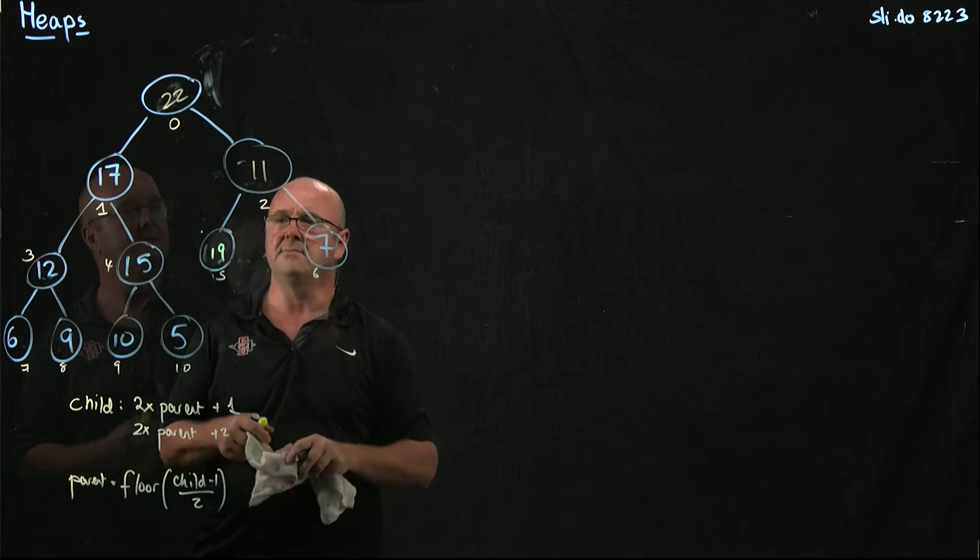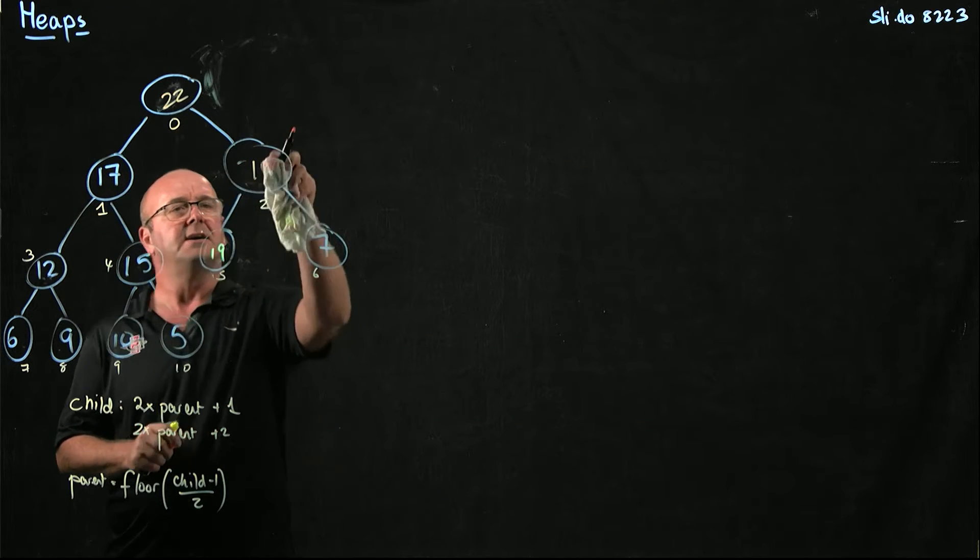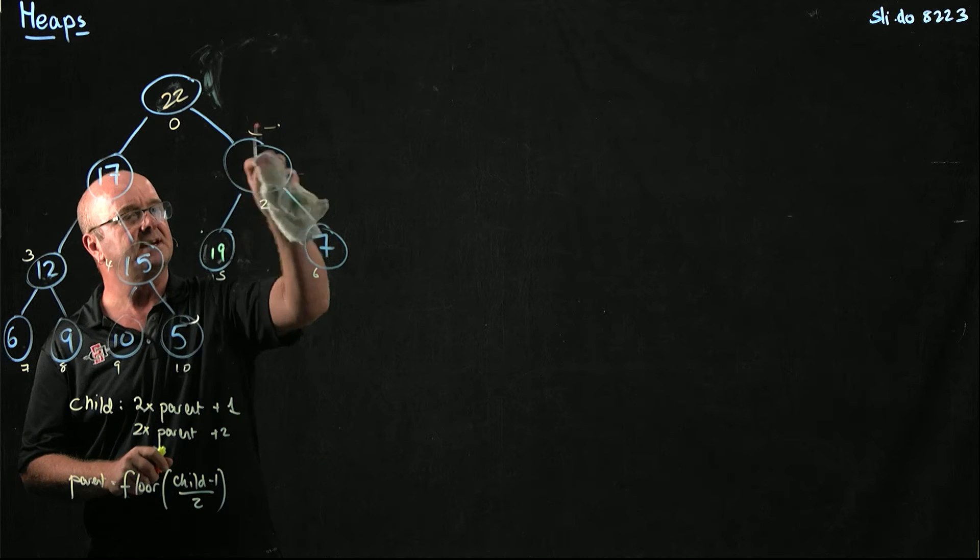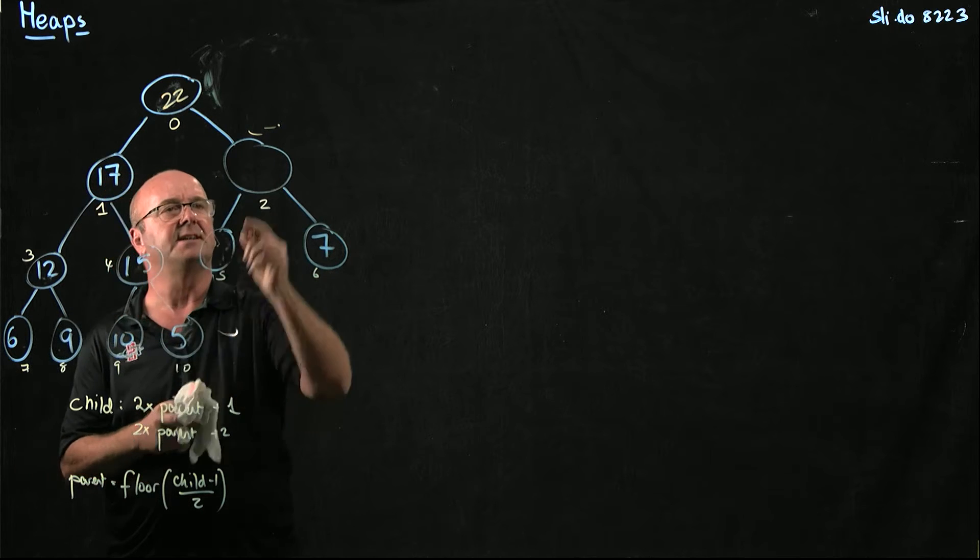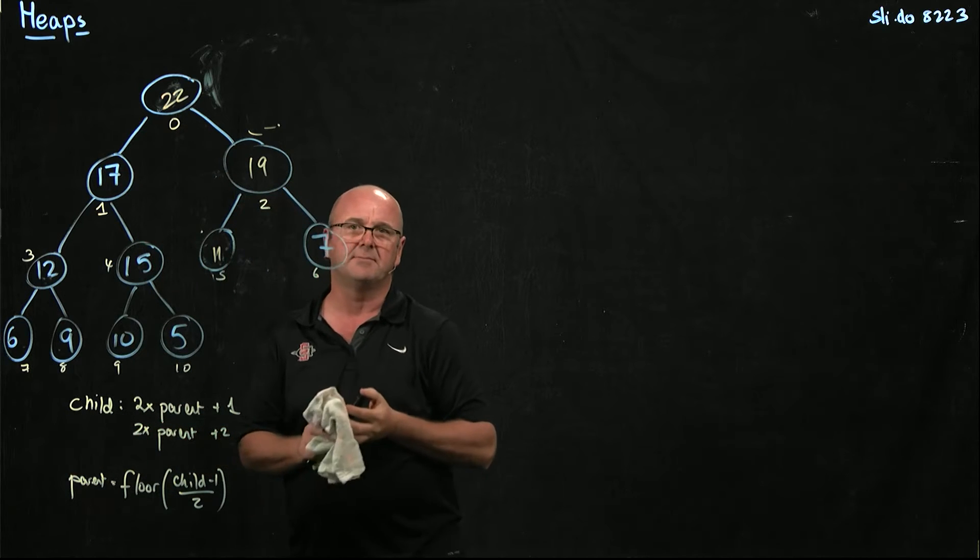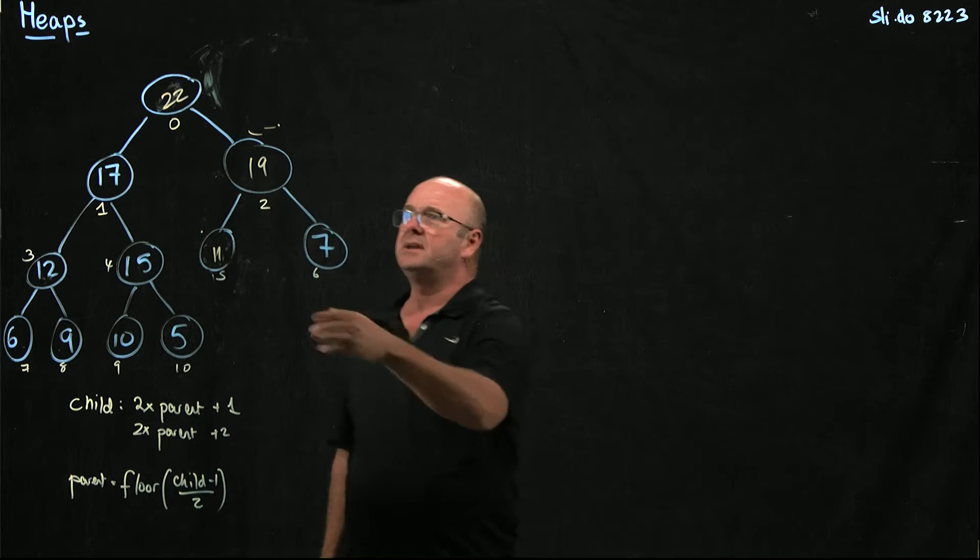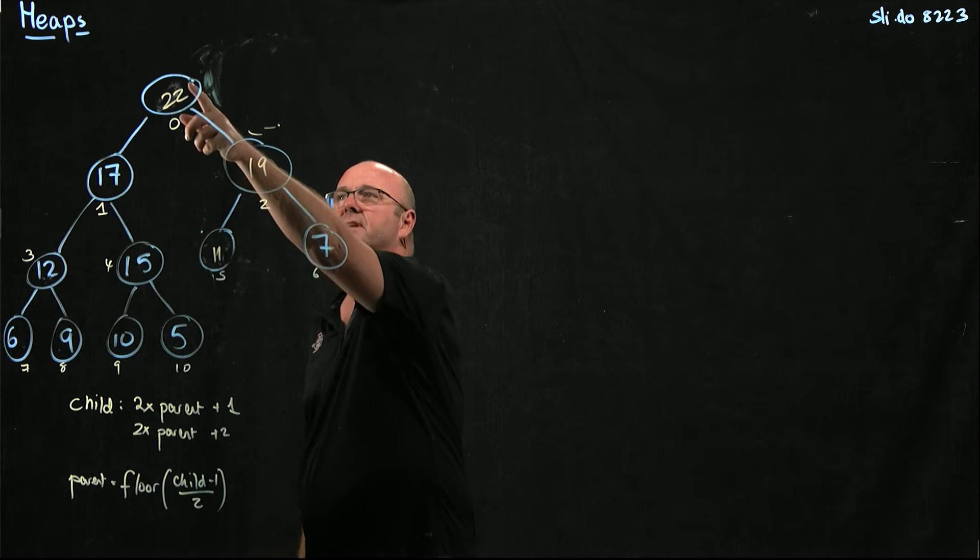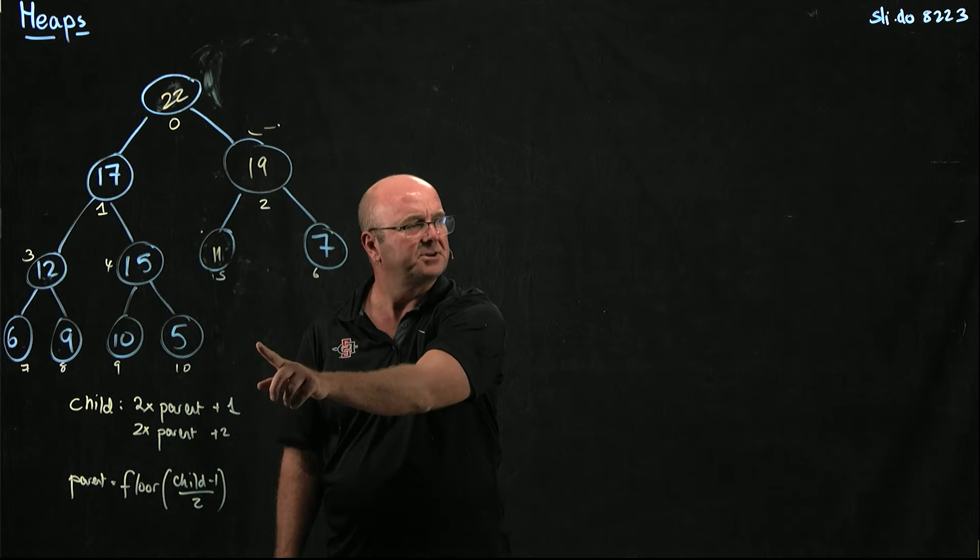And then we check and see, is this smaller? It is. So we take the 11, and we swap it with the 19. And then we're done. So we take the last element, we put it in that root position, and then we trickle down.